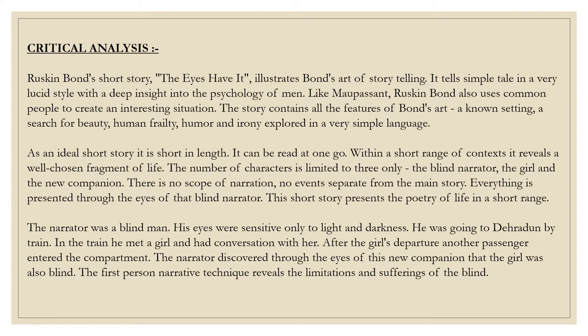This short story presents the poetry of life in a short range. The narrator was a blind man whose eyes were sensitive only to light and darkness. He was going to Dehradun by train. In the train, he met a girl and had a conversation with her. After the girl's departure, another passenger entered the compartment, and the narrator discovered through the eyes of this new companion that the girl was also blind. The first person narrative technique reveals the limitations and sufferings of the blind. It is a story of human frailty with some added humor of irony.